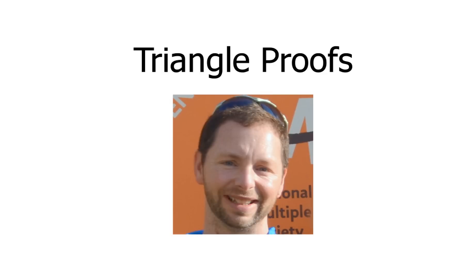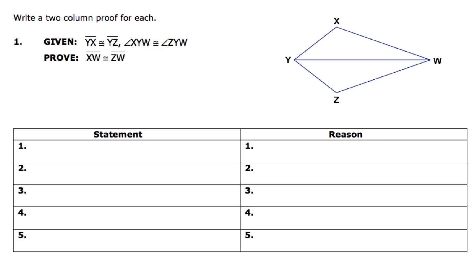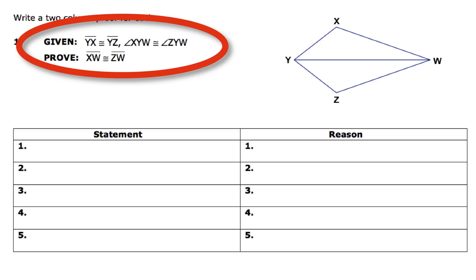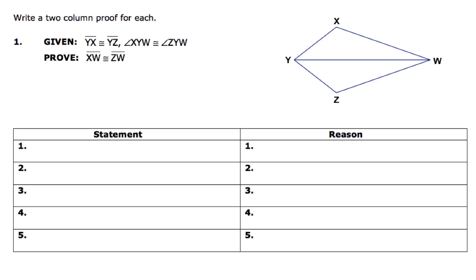Welcome today, boys and girls. We're going to take a look at triangle proofs. With all of these proofs, there are going to be some patterns that you'll be able to pick up on right away. So let's take a look at our very first one. We've got to write a two-column proof. We're given some information and we've got to prove some information. What we're going to do first is write down our given information.